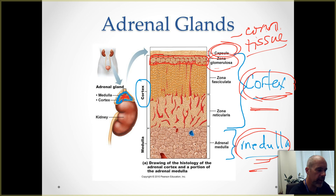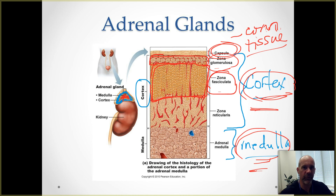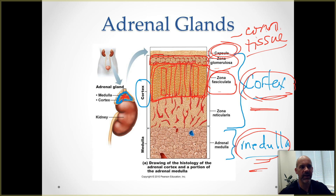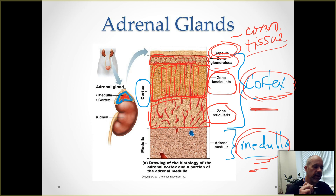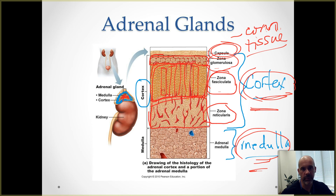Going deeper into the adrenal gland, still in the cortex near the surface, you have a completely separate sub-layer called the zona fasciculata. You'll need to practice the spelling on these — they're kind of odd words. This layer actually looks like strips of cells, almost like curtains or vertical blinds composed of cells. Going a little bit deeper, you have another sub-layer called the zona reticularis. The main hormone in the zona fasciculata is cortisol, which is involved in stress responses, and the main hormones made by the zona reticularis are sex hormones.